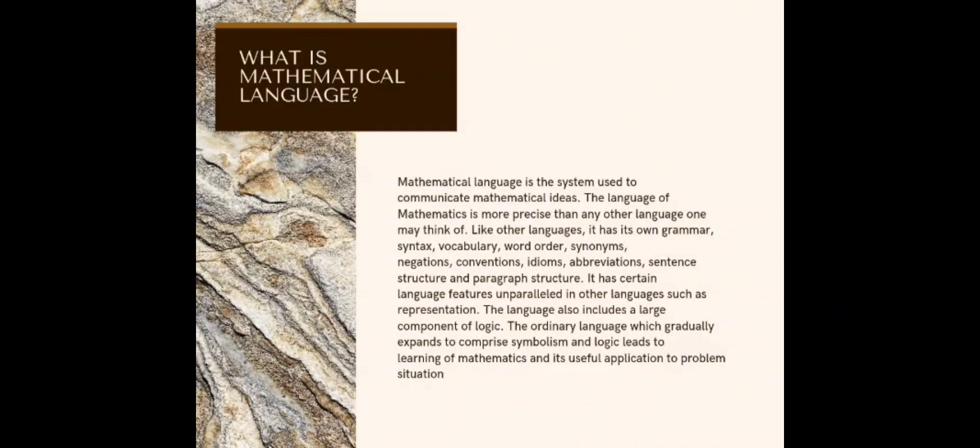Mathematical language is the system used to communicate mathematical ideas. The language of mathematics is more precise than any other language. Like other languages, it has its own grammar, syntax, vocabulary, word orders, synonyms, negations, conventions, idioms, abbreviations, sentence structures and paragraph structure. It has certain language features and parallel in other languages as a representation.